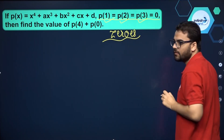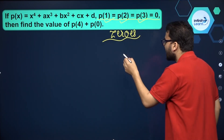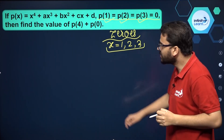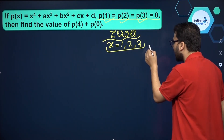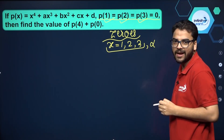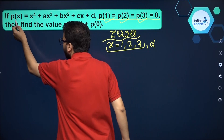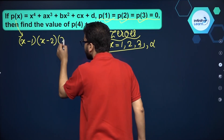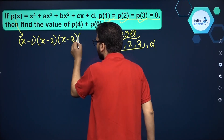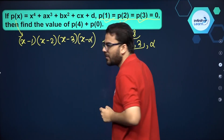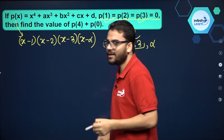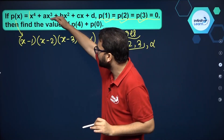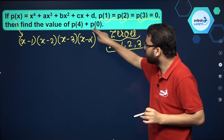It is given to us that p of 1 is equal to p of 2 is equal to p of 3 is equal to 0, so we can say x equals 1, 2, and 3 are the zeros of this polynomial. Because it is a degree 4 polynomial, we can assume one more zero is alpha. So p of x can be represented as (x minus 1)(x minus 2)(x minus 3)(x minus alpha). You don't have to multiply by any real number because the leading coefficient is 1.